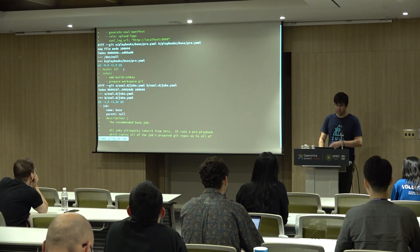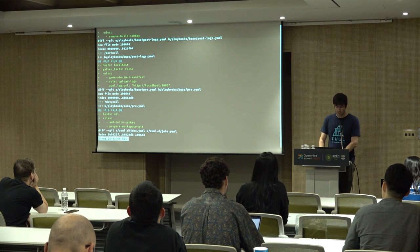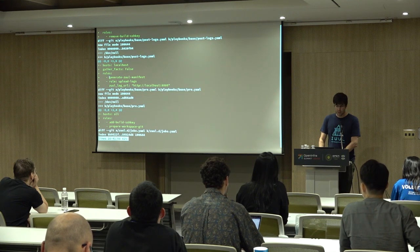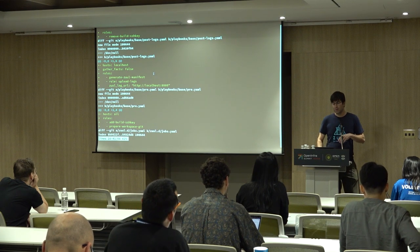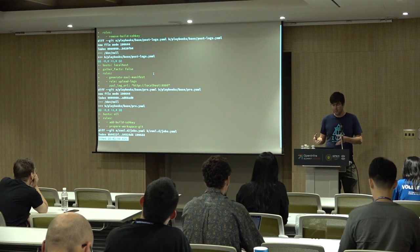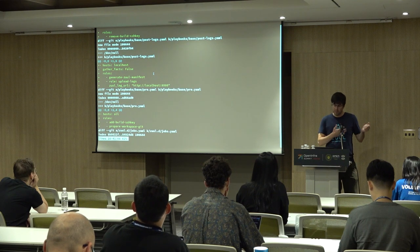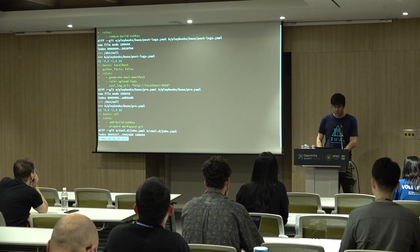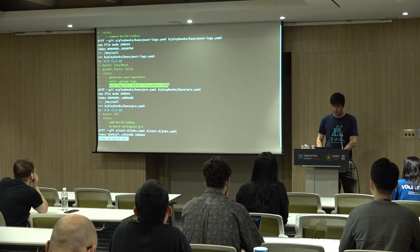We don't have to write that code if we're pulling it in from Zuul-jobs — it's all written for us. In the post-logs playbook, we're going to generate a Zuul manifest using a standard library role. What that does is generate a list of files, logs, and artifacts that we're going to report back to Zuul. The job is responsible for recording that information and feeding it back to Zuul. Then we're actually going to upload the logs to our log server and tell Zuul it can find those logs at the location of our container that is hosting them.